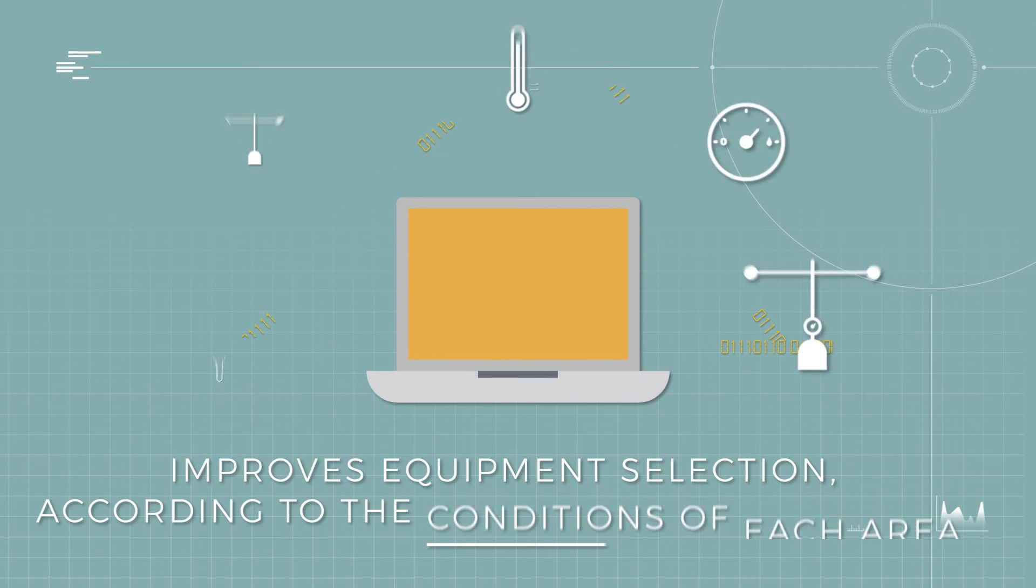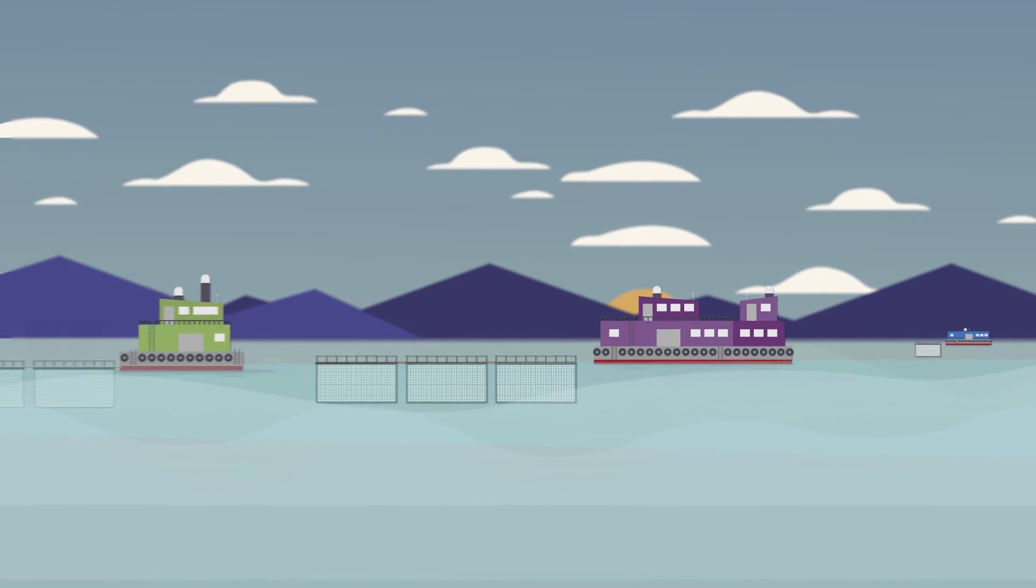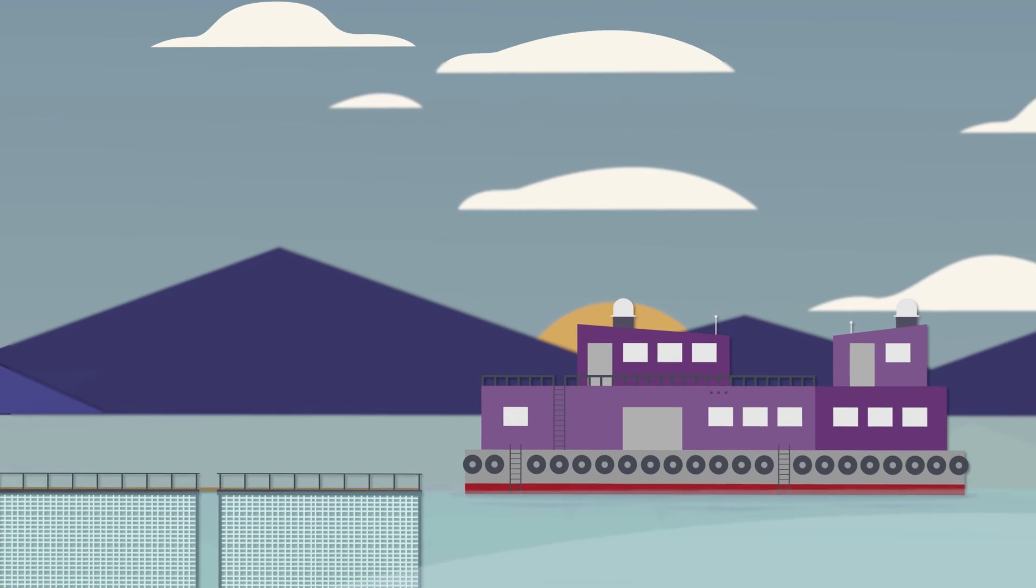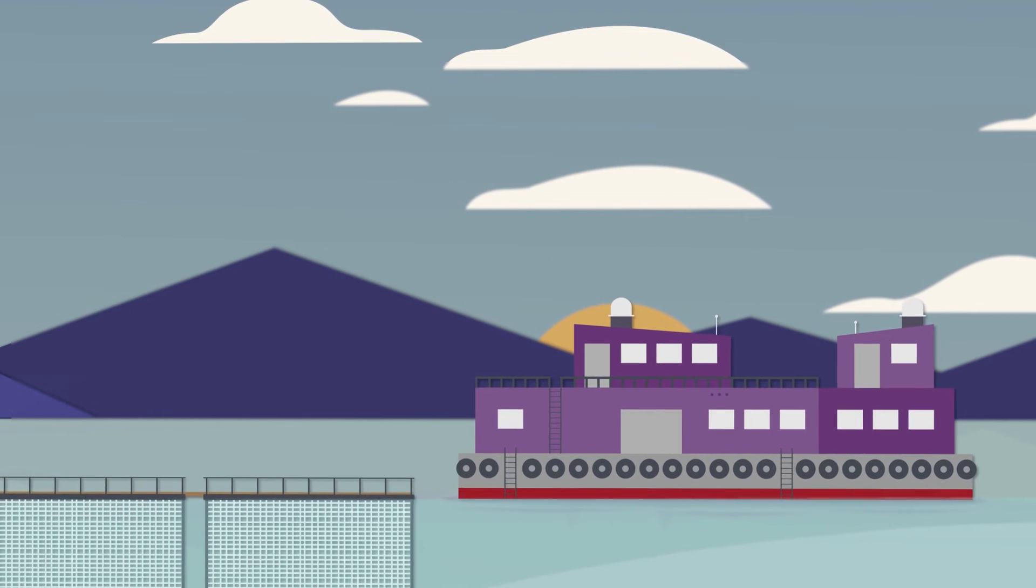Improves equipment selection according to the conditions of each area. This service is aimed at fish farms in the aquaculture industry that operate under the formats of license acquisition by concession or concession groups.